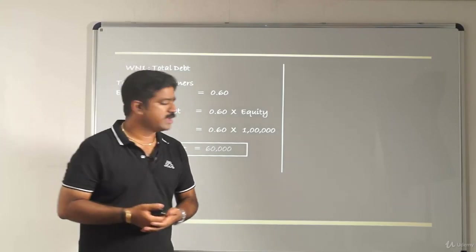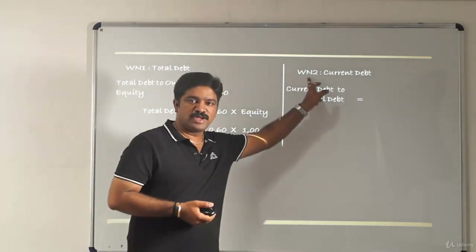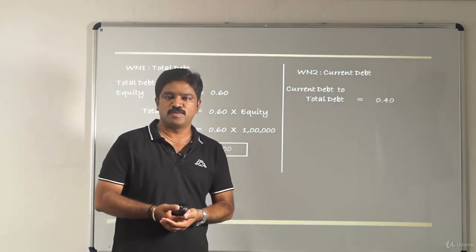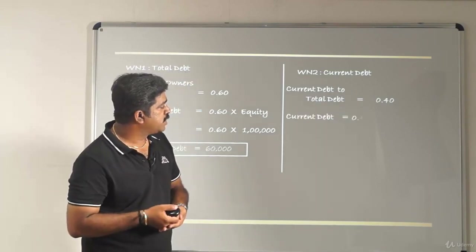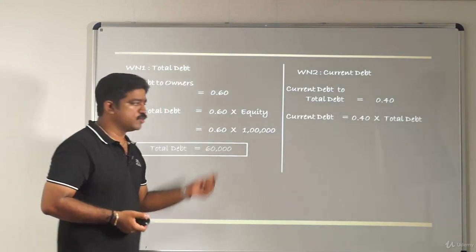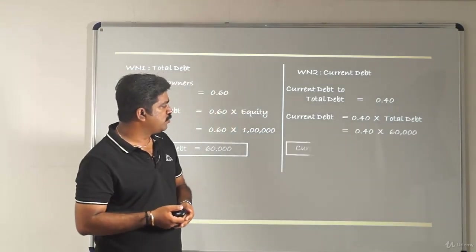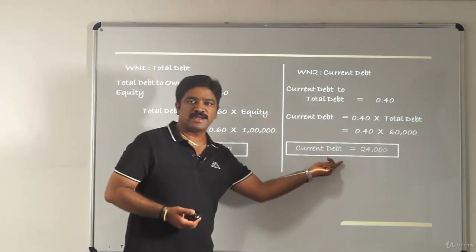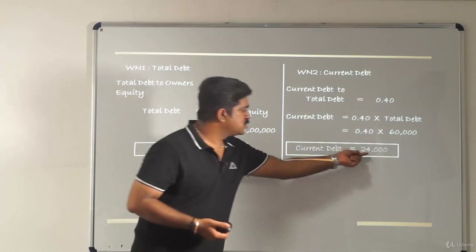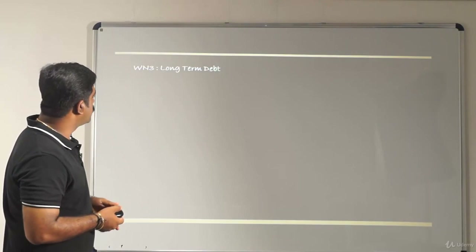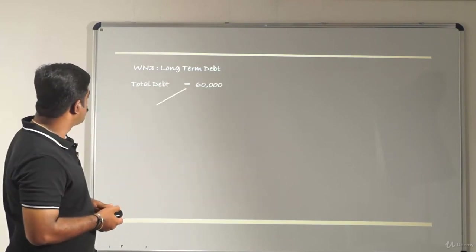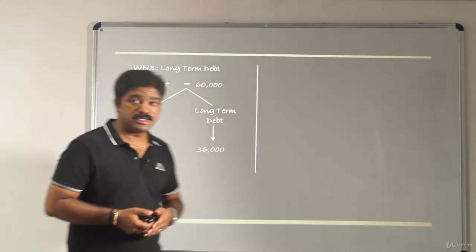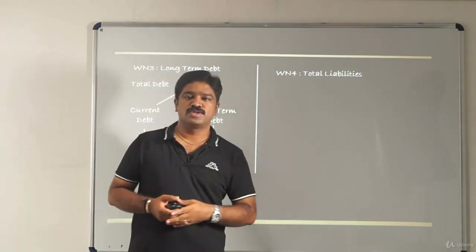Working Note 2: current debt to total debt is 0.40, so current debt equals 0.40 multiplied by 60,000, which is 24,000. Working Note 3: long-term debt is total debt minus current debt — that is 60,000 minus 24,000 — giving long-term debt of 36,000.